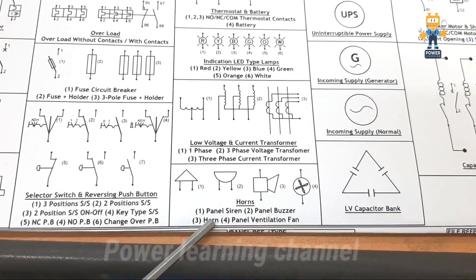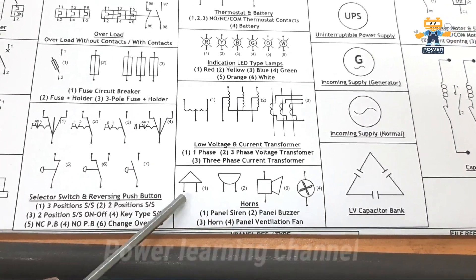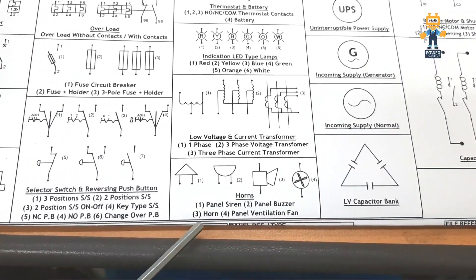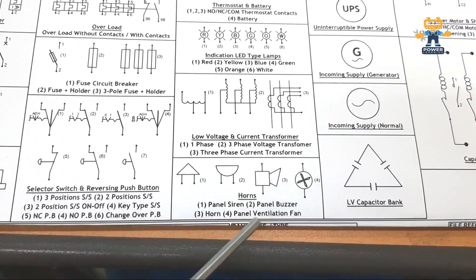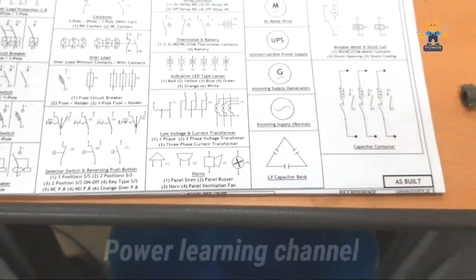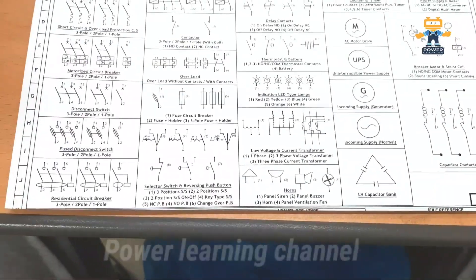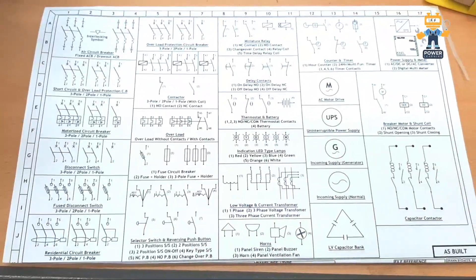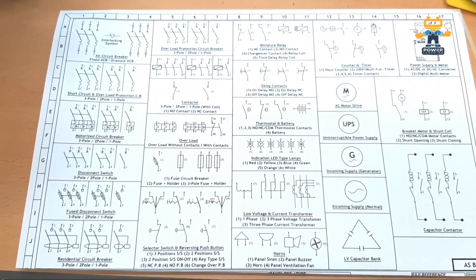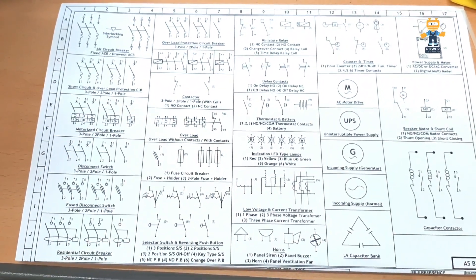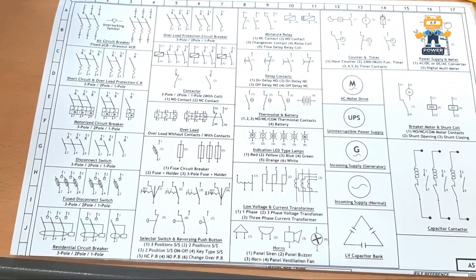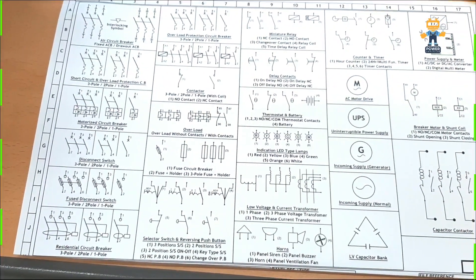Here are some more symbols we missed: number one is a panel siren, number two is a panel buzzer, number three is a horn, and number four is panel ventilation. I hope all of you liked this video — kindly like, share, and subscribe to the channel. If you want another topic related to this, just let us know and we will work on it and come back to you soon.